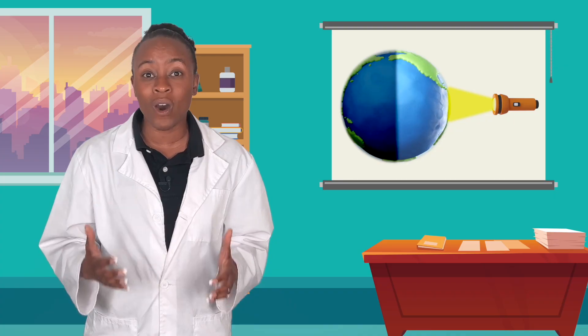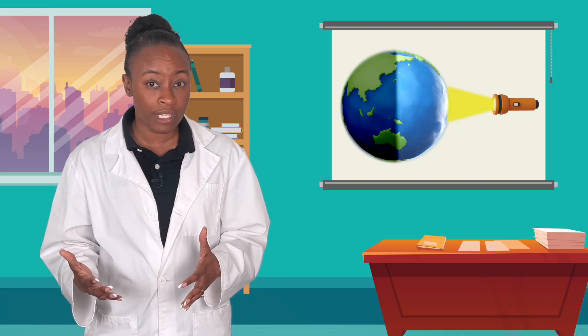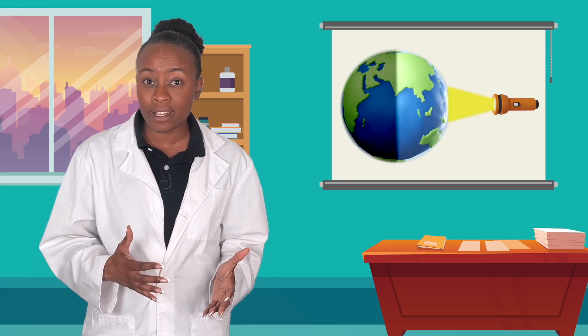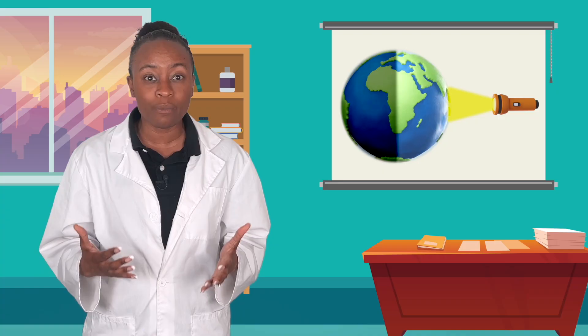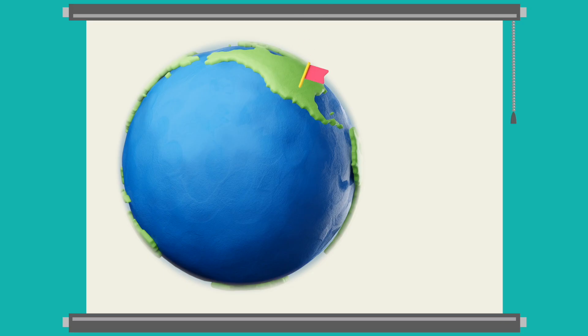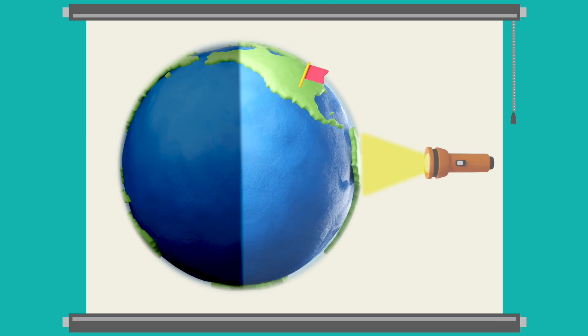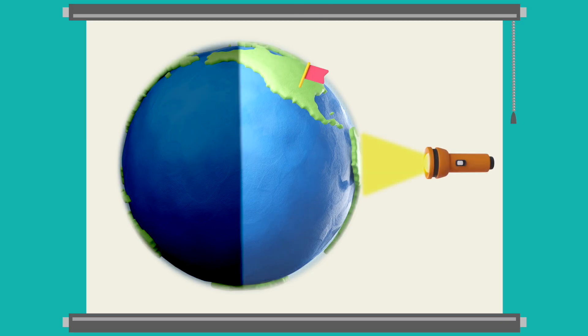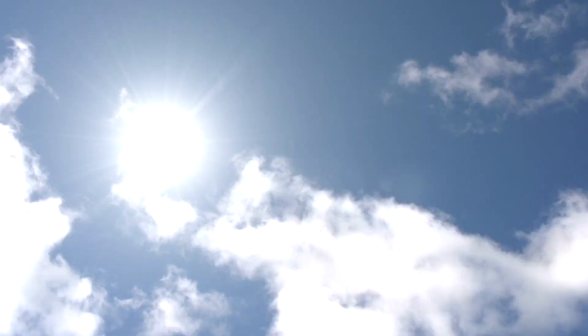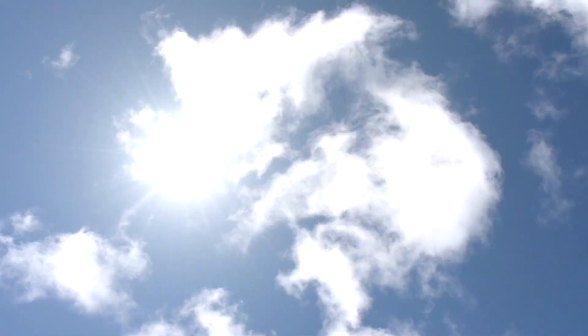The sun, on the other hand, doesn't move at all. So, if the earth is moving but the sun is still, the change in the light we get must be caused by the earth spinning. Let's say we live right here and we are in direct sunlight. That means it's midday. At midday, the sun appears to be directly above us. That's because our part of the earth is turned directly toward the sun.